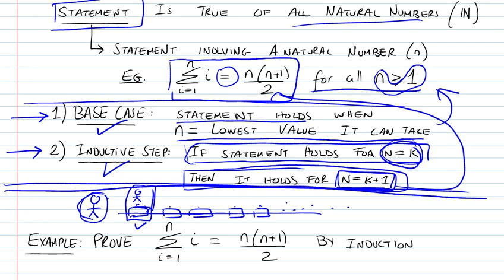Then you need to prove the inductive step: given that the person is standing on any rock — call it rock k — he could actually jump to the next rock, k plus 1. We assume he is standing on rock k, and we have to show that the jump to the next rock is possible. If we can prove that the person could stand on the rock without falling off, and that given he can stand on any rock he can jump to the next one, then we've basically proved the problem.